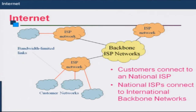By this interconnection of customer networks, national ISPs, and multiple international ISPs, a very large global network is formed which is called the internet. So internet is nothing but a very large network of networks — a very large network created globally by interconnecting multiple smaller networks across the globe.